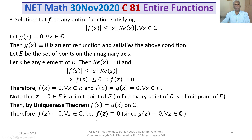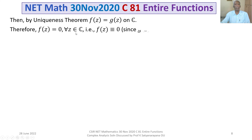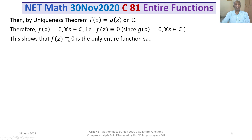We gave freedom for F — F was any entire function. Our proof shows there exists a unique function satisfying this condition, namely F(Z) identically equal to 0. This shows that F(Z) ≡ 0 is the only function, the unique entire function, satisfying the given property.